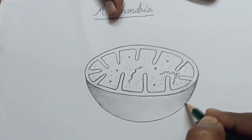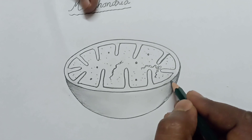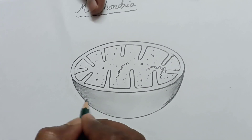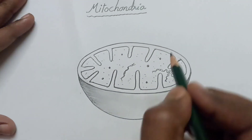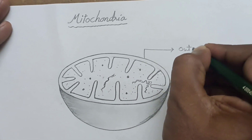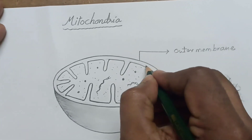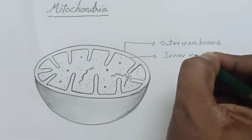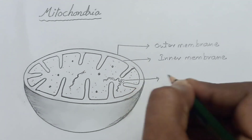The diagram of mitochondria is completed. Now we go for the labeling. This is the outer membrane. This is the inner membrane.